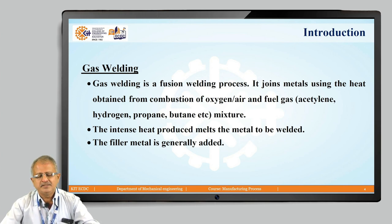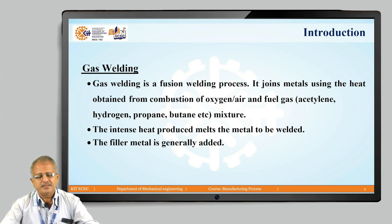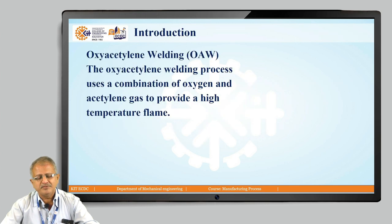Gas welding is mainly a fusion welding process. It joins metal using the heat obtained from the combustion of oxygen or air and fuel gas. Fuel gas is acetylene, butane, or propane etc. An oxy or air plus fuel mixture is used as a source of heat, and because of that combustion process, the intense heat is produced which melts the base metal, and then filler material is added to get the joint.